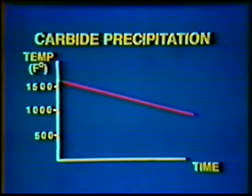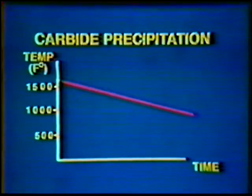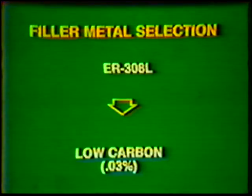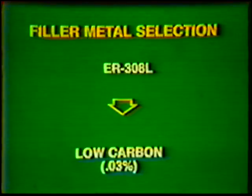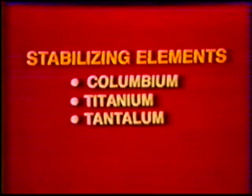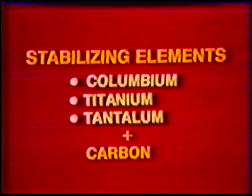This problem can be reduced through proper selection of filler metals and interpass control. Selection of a low-carbon filler material can reduce the problem. For instance, an ER-308L filler metal contains a carbon content of 0.03%, adding only a small amount of carbon to the weld and reducing the amount of carbon that can combine with chromium to form carbides. Another method is to use a filler metal containing stabilizing elements such as columbium, titanium, or tantalum. These elements tie up the carbon to prevent it from combining with chromium.